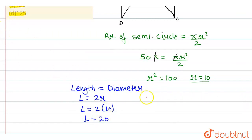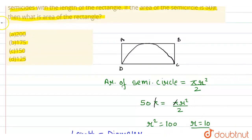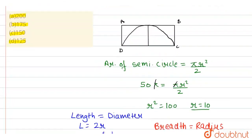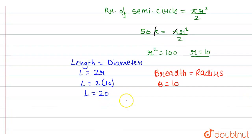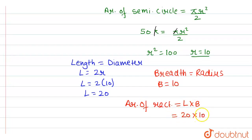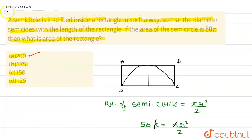और हमारी breadth हमारी radius के equivalent है. जो यह part है, यह हमारा radius ही है, और यह हमारे BC के equal है और AD के भी equal है, जो कि हमारी breadth है हमारे rectangle की. So, breadth हमें मिली 10, जो कि है radius. So, अब area of rectangle = l × b = 20 × 10 = 200. So, 200 हमारा answer है, that is Option A is our correct answer. Thank you.